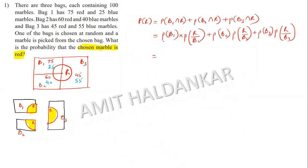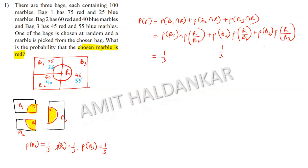P(B1) is the probability of getting bag B1. Since there are three bags, I can select any one out of three, so P(B1) = P(B2) = P(B3) = 1/3.